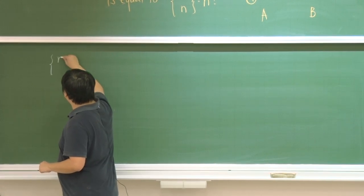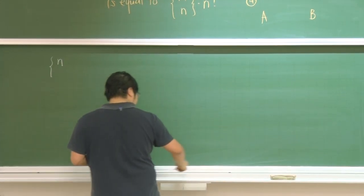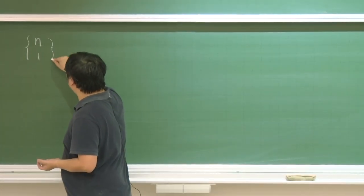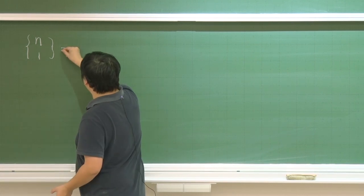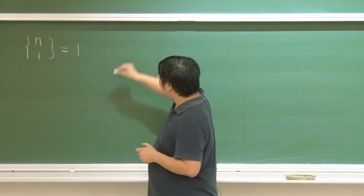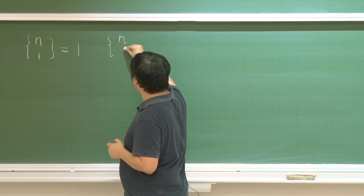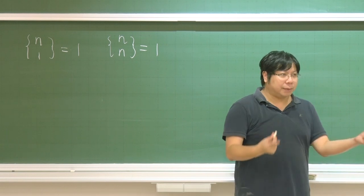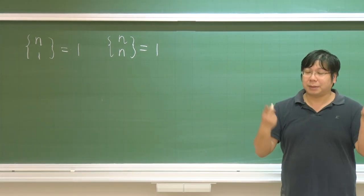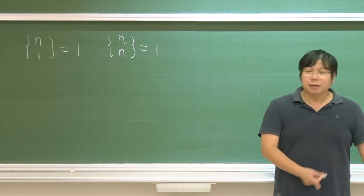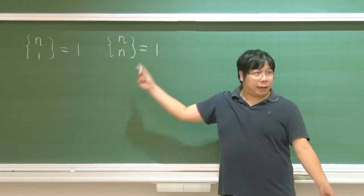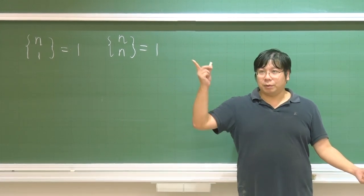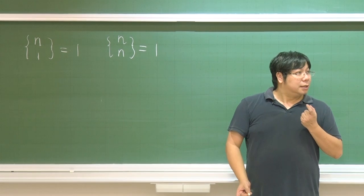Let us have some observations about this N(n,r) thing. N(1,r) is equal to 1, and N(n,n) is also equal to 1. How many ways are there to put n balls into one box? There must be one way, because you can't have it empty. And how many ways to put n balls into n boxes? The boxes are non-distinct, so there is actually one way — you have to put one ball in each box.